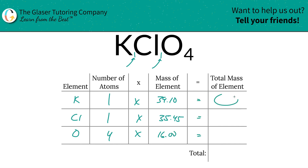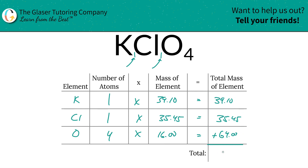Simply then, to find the total mass of each element in the compound, multiply the row together. So that's going to be 39.10 for potassium, 35.45 for chlorine, and 64 for oxygen. And then to find the total mass of the entire compound, all you do is add this column up — the total mass is going to be 138.55. And there it is — that's the first step, finding the total mass.